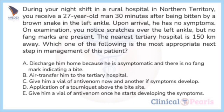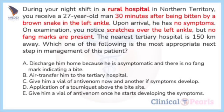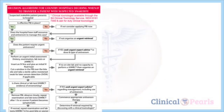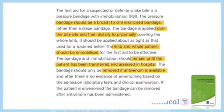C) give him a vial of antivenom now and another if symptoms develop, D) application of a tourniquet above the bite site, E) give him a vial of antivenom once he starts developing symptoms. This is a case of a snake bite and different states have their own guidelines. Take note that this setting is in a rural area and a different algorithm should be followed in country hospitals. According to the guidelines in South Australia, if a suspected snake bite presents in the hospital, one must put a PBI in place first.